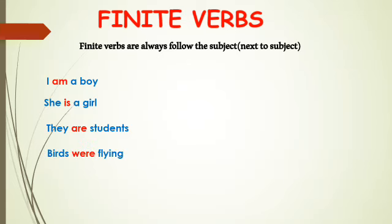'Birds were flying' — 'birds' is plural, past tense, so it takes 'were'. If it's a singular 'bird was playing', the verb changes to 'was'. In present tense it would be 'is'. So the verb depends on the subject. That word which changes based on subject and tense is called a finite verb.